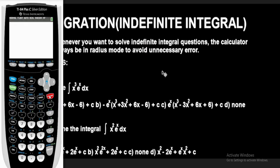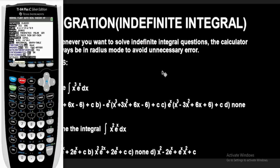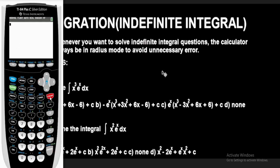Now ensure your calculator is in radian mode. By default, the TI-84 plus calculator is in radian. If yours happens to be in degree, press the mode button and come down. You'll see radian displayed. Press the right button to go to degree and press enter to switch — but for integration, we must be in radian. So go back and press enter to select radian mode.